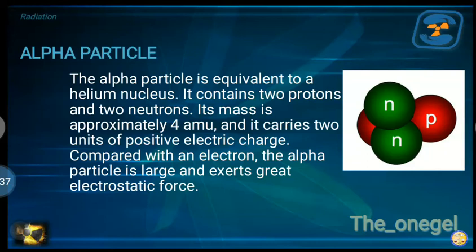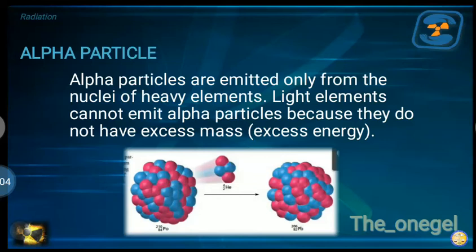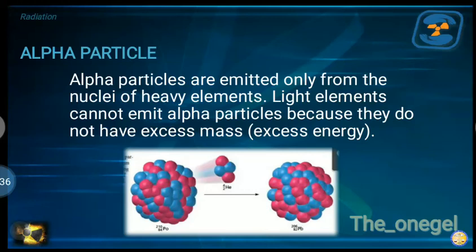Compared with an electron, the alpha particle is large and exerts great electrostatic force. Alpha particles are emitted only from the nuclei of heavy elements with atomic mass number greater than or equal to 150. Below 150, atoms are not capable of emitting alpha particles, because light nuclei do not have excess mass or excess energy. When an element undergoes alpha emission, the atomic mass number is reduced by 4 and the atomic number is reduced by 2.